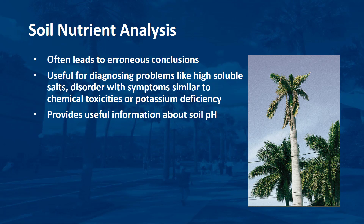Soil nutrient analysis has often been employed in the diagnosis of plant problems in the landscape and field nursery. Unfortunately, this technique has limited value for this purpose and often leads to erroneous conclusions. Just because a nutrient element is found to be deficient in the soil does not mean that the plant is unable to extract sufficient amounts of that element from the soil. Soil analysis can be useful for diagnosing problems such as high soluble salts, a disorder with symptoms very similar to those of chemical toxicities or even potassium deficiency in some species. Soil analysis may also provide useful information regarding soil pH, which could affect your choice of corrective fertilizers or explain why a deficiency is occurring.